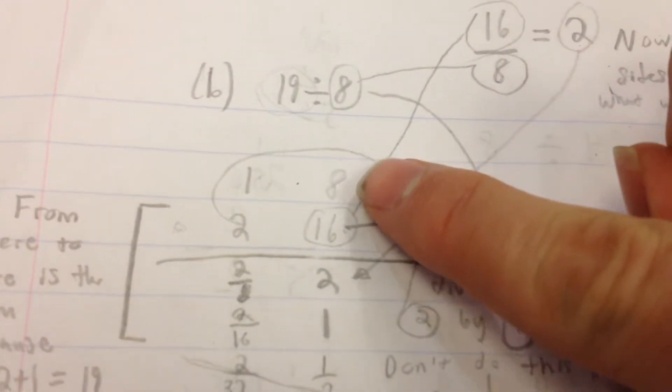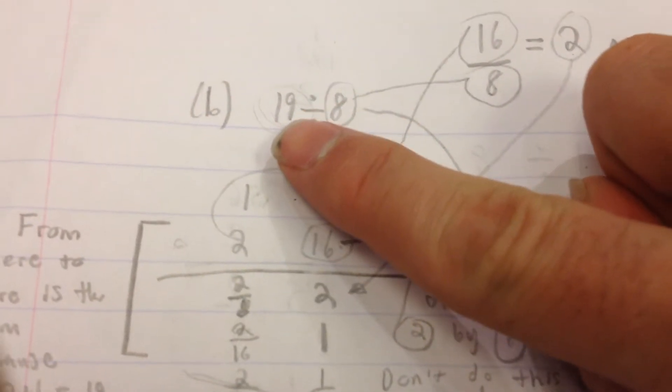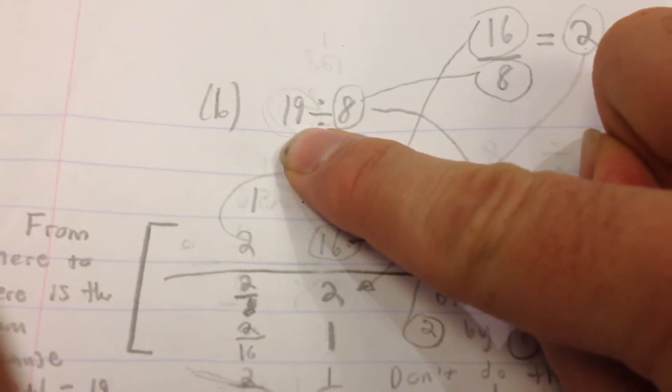Which is 8. We start with 8, then go up to 16, but we don't go any further because of 19 right here.